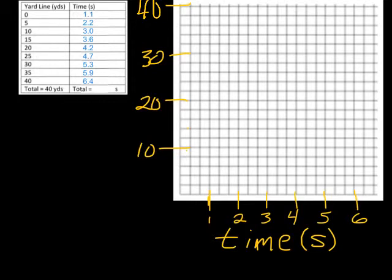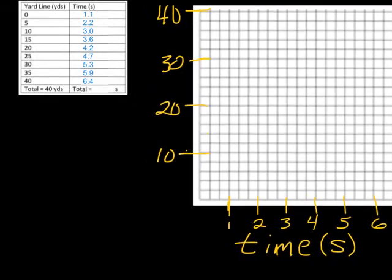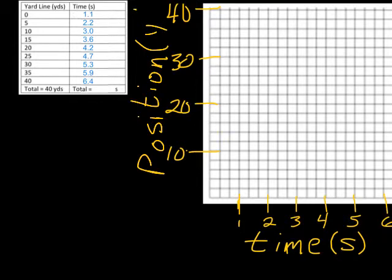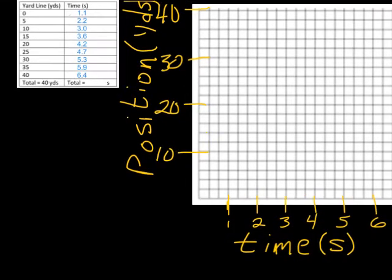And, now, I still have to label what I've done for the y-axis. I'm just going to move this over this way so that you can see. I can write down, have enough room to write down position. And, position is going to be labeled as yards.